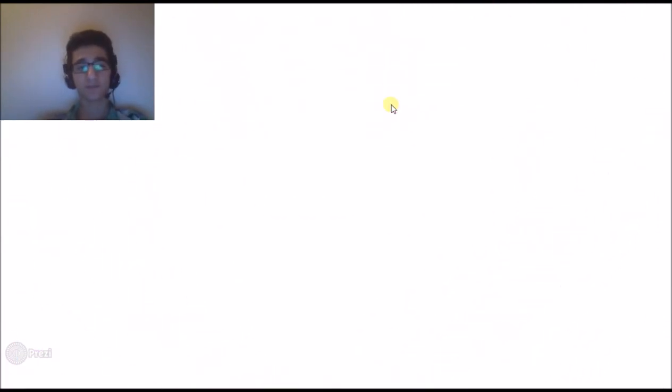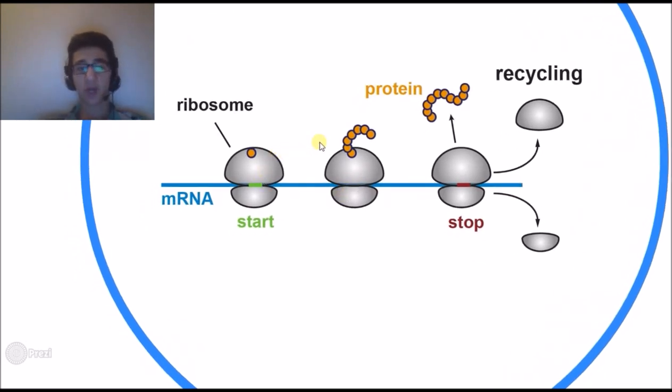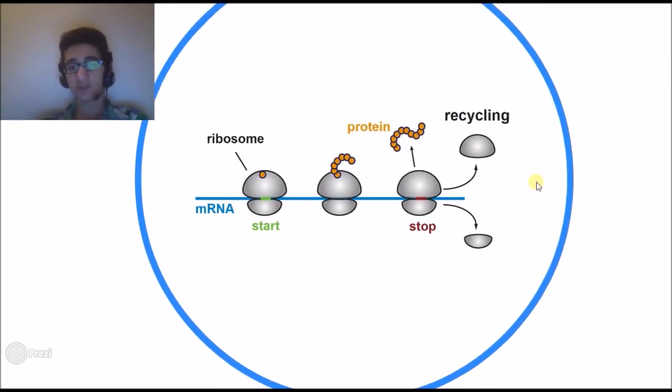What are ribosomes? Now these things are ribosomes. They read the RNA code and make amino acids. This is where it starts. It keeps on building up every three letters to make a type of amino acid, and then the amino acids form protein. When it's done, the ribosome recycles.